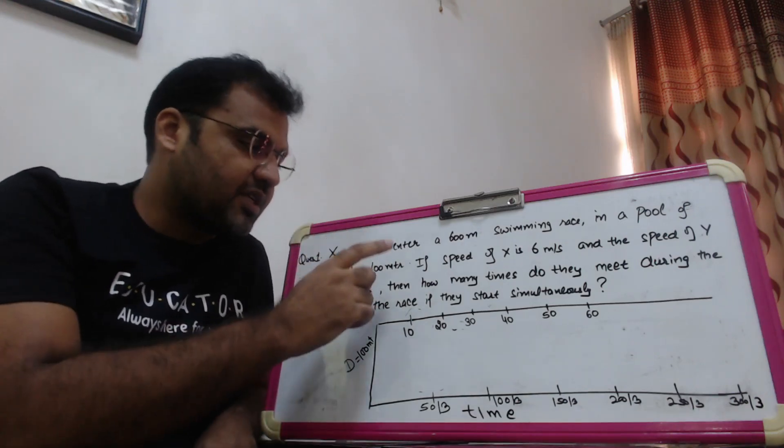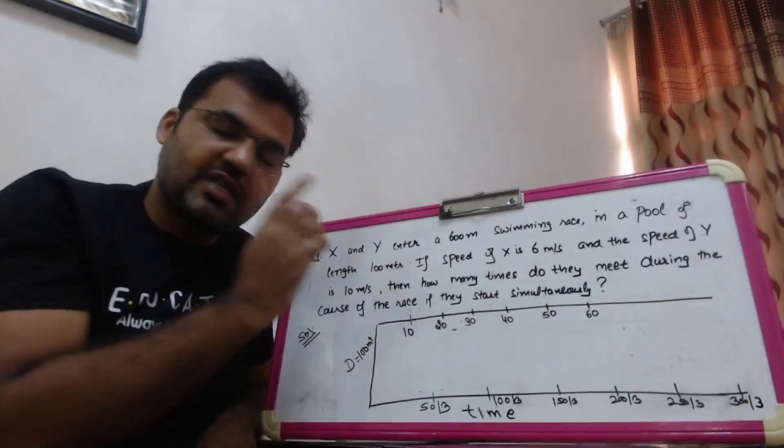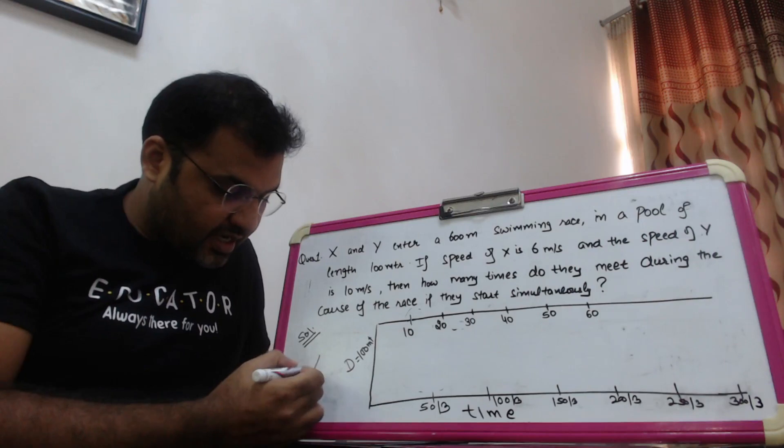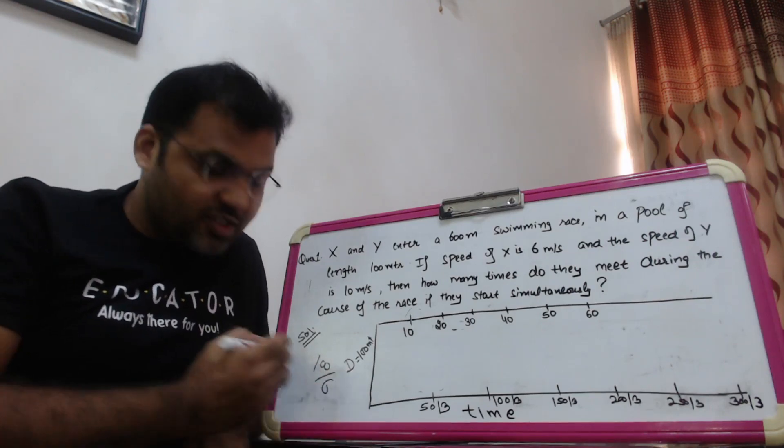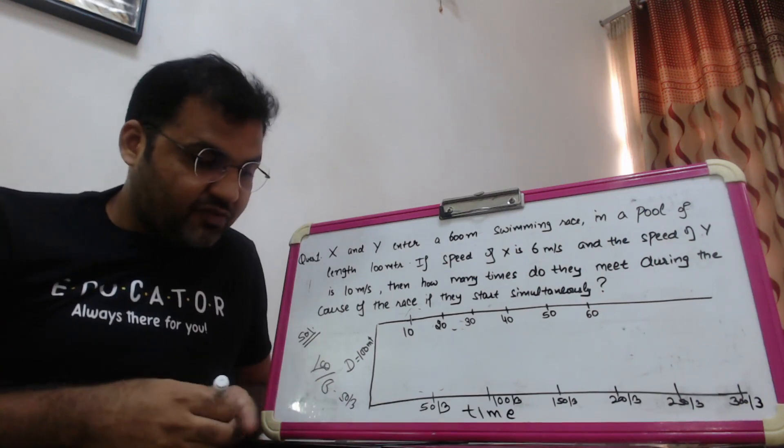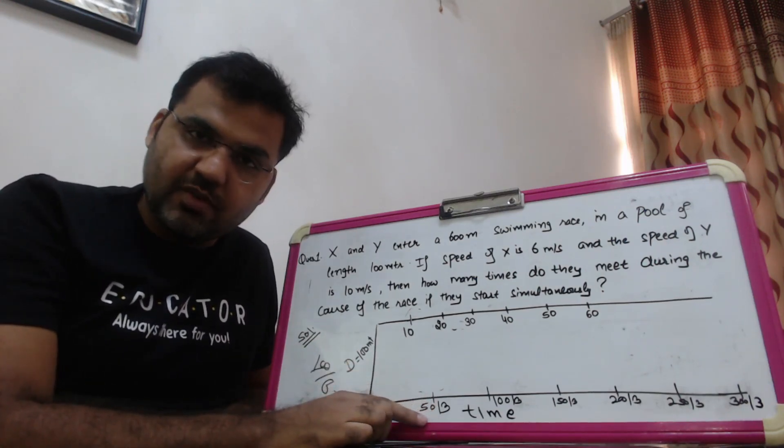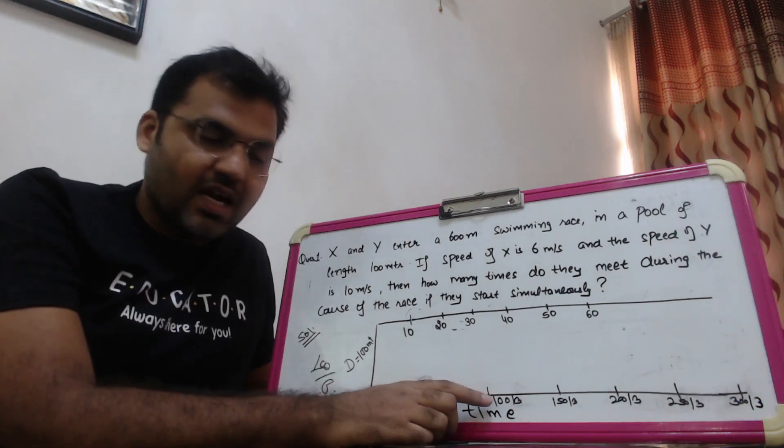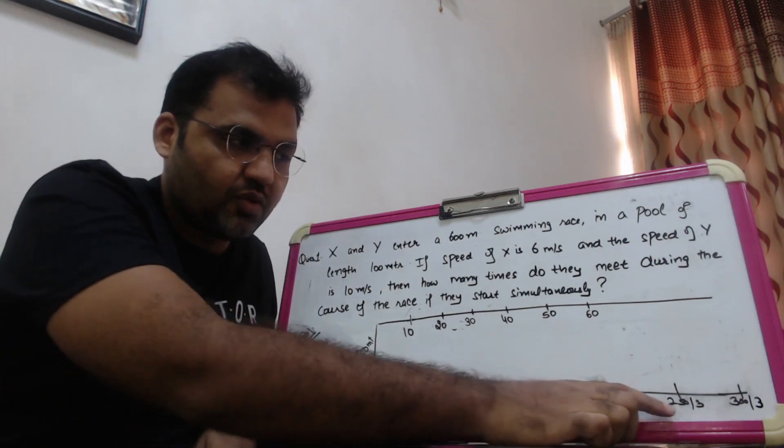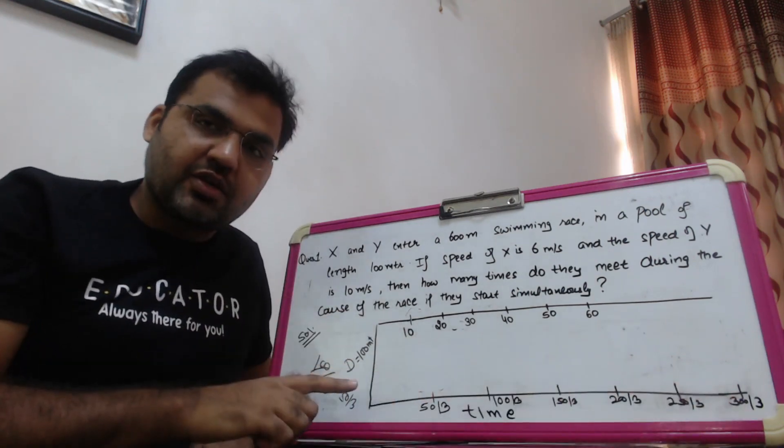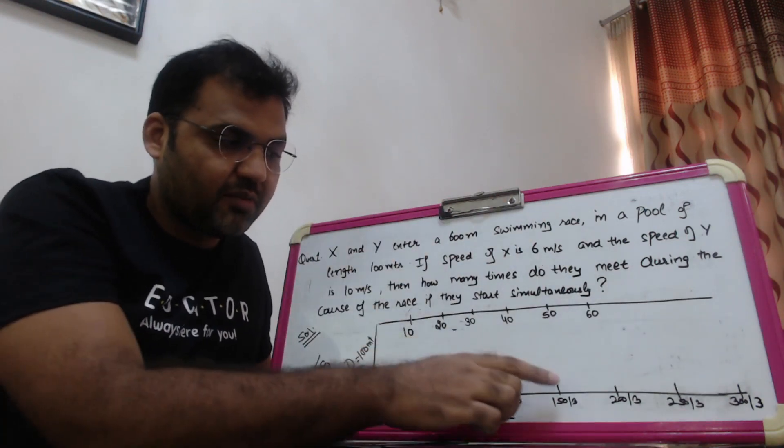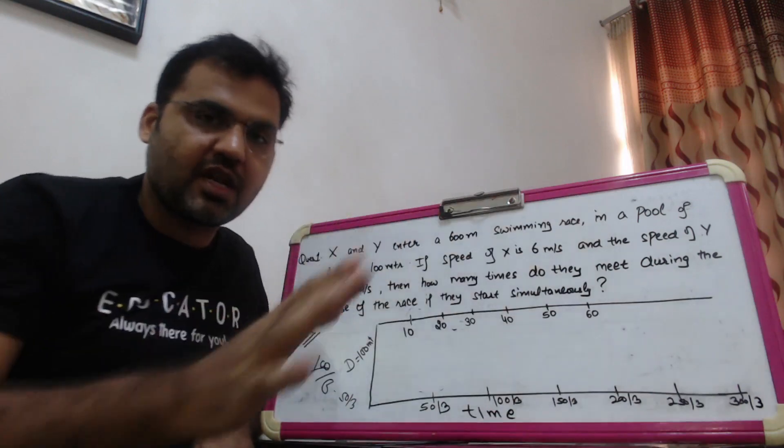For example, 600 meters in a 100 meter pool. X's speed is 6 meter per second, so 100 meter distance at speed 6 will take 50/3 seconds. That means the first lap will be covered in 50/3 seconds, so I've marked 50/3 here. Second will be 100/3, third will be total time 150/3, then 200/3, 250/3 and 300/3. X's 6 laps will be covered in this duration. First lap, second lap time, third lap, fourth lap, fifth lap and sixth lap. Each full lap is 100 meters.